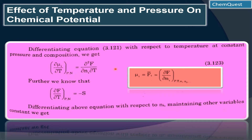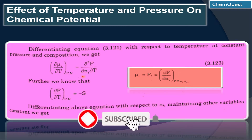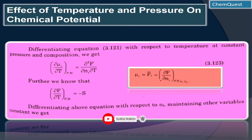Since the ∂ factor is already given, when we differentiate this way it becomes a double differentiation, and we write it as ∂²F / (∂nᵢ ∂T), keeping pressure and composition constant. Now, entropy has been introduced as another thermodynamic quantity: entropy S = −∂F/∂T at constant pressure and composition. This is the mathematical definition of entropy.